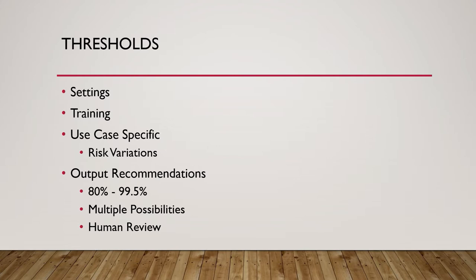That's where thresholds and settings come into play. Depending on your use case and what level of risk is involved in a false positive or false negative, you want to set thresholds appropriately. If you're letting people into a building, is it more important to err on the side of not letting in someone who is allowed — creating more friction in their process — because everything inside is so sensitive? Or is it more of a general security situation where you're better off not impeding people likely to be okay? Those decisions are case-by-case and risk-specific.